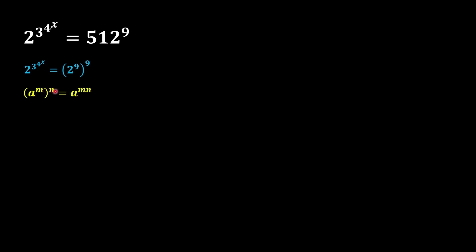In the next step, we apply the basic rule of algebra: if a value has a power of a power, then both powers multiply together. Applying this rule, we multiply the powers and get 2^81, because 9 × 9 = 81. The other part of the equation remains the same.